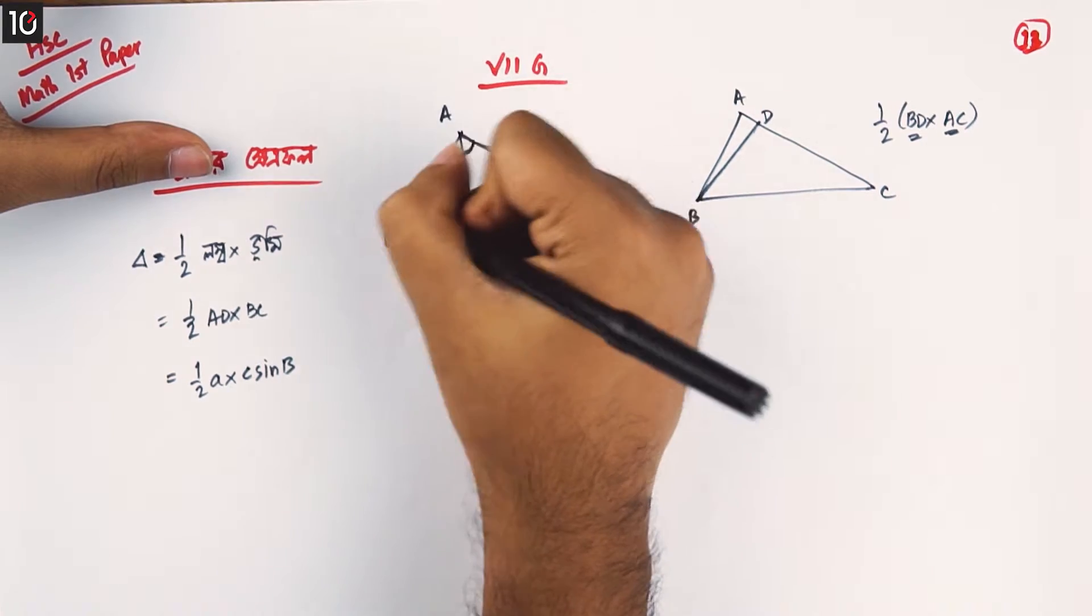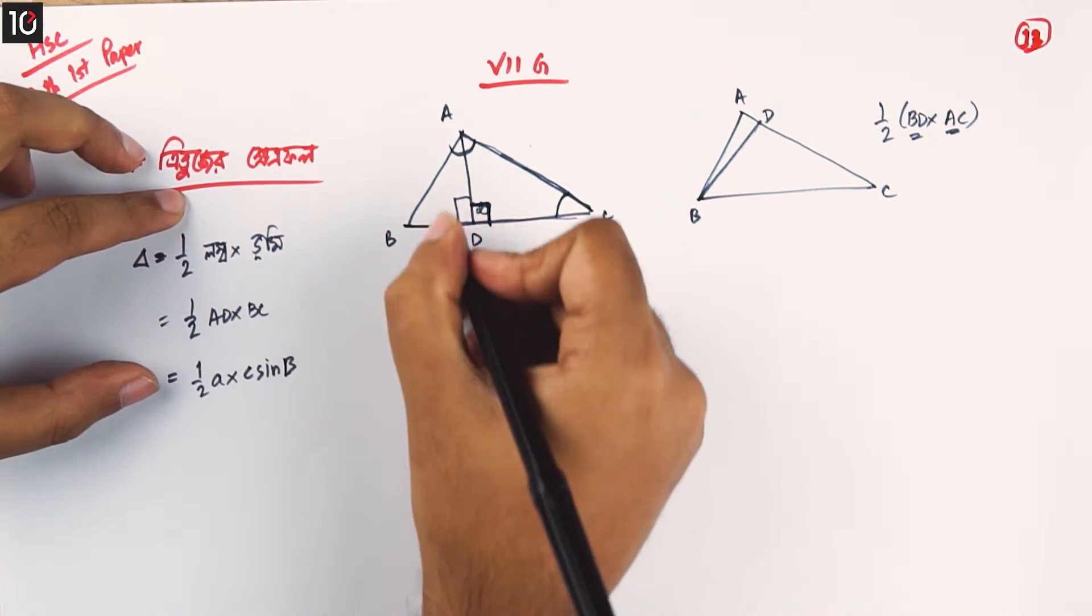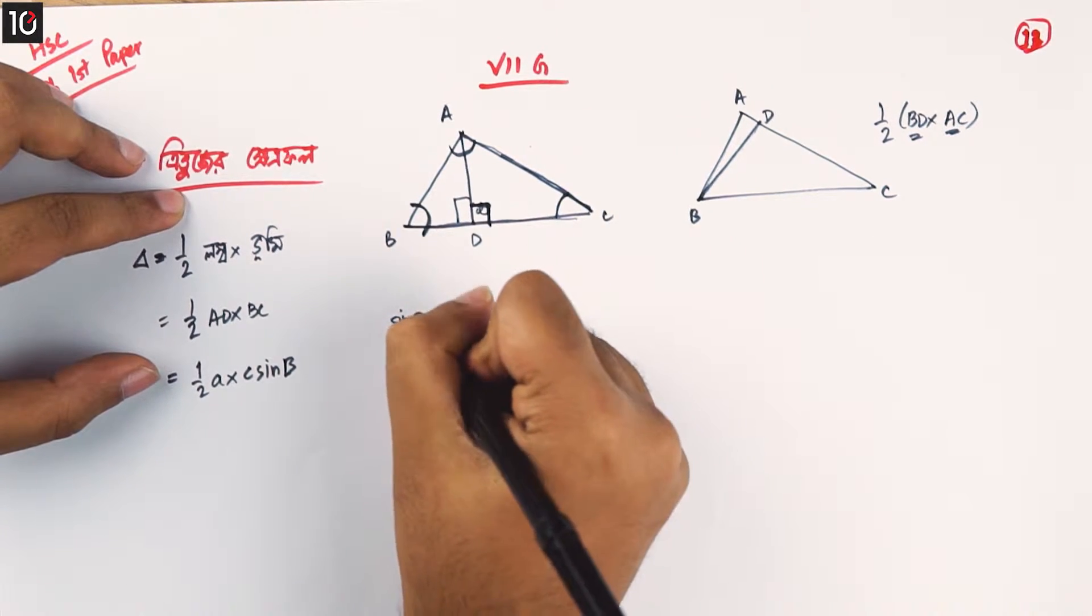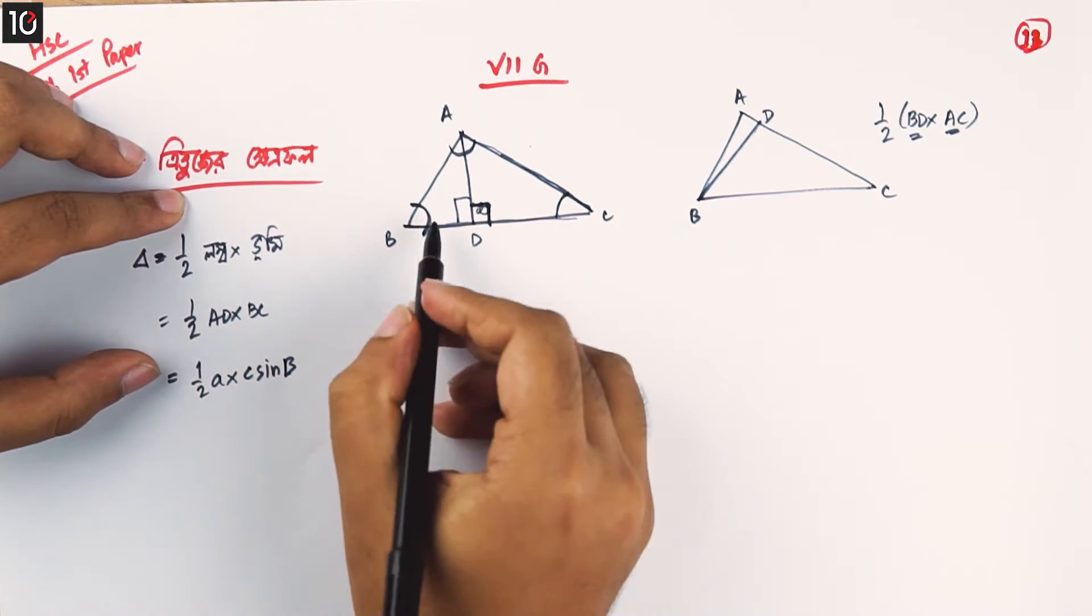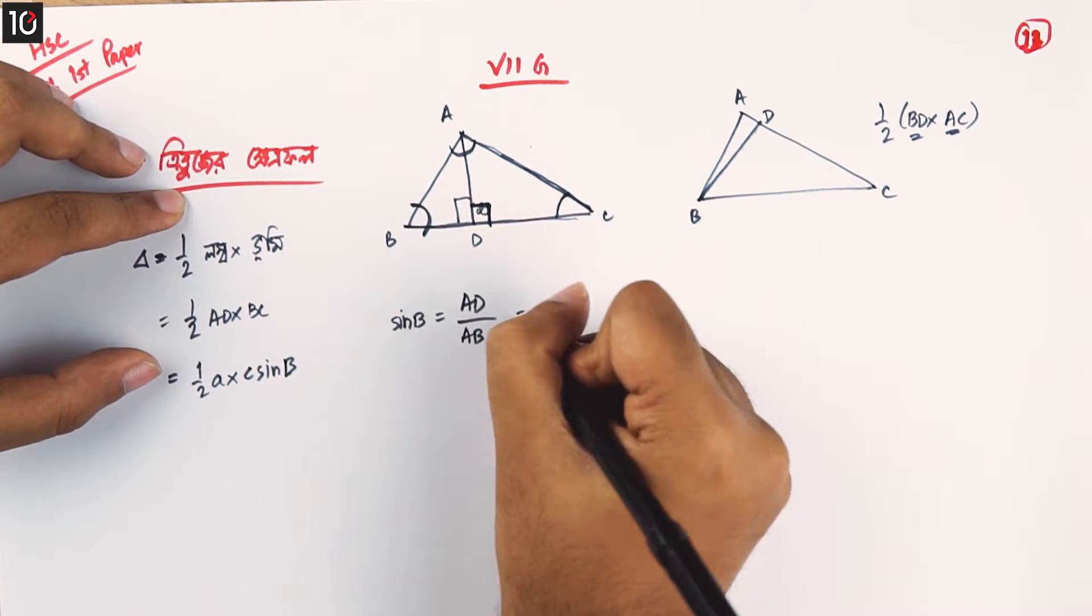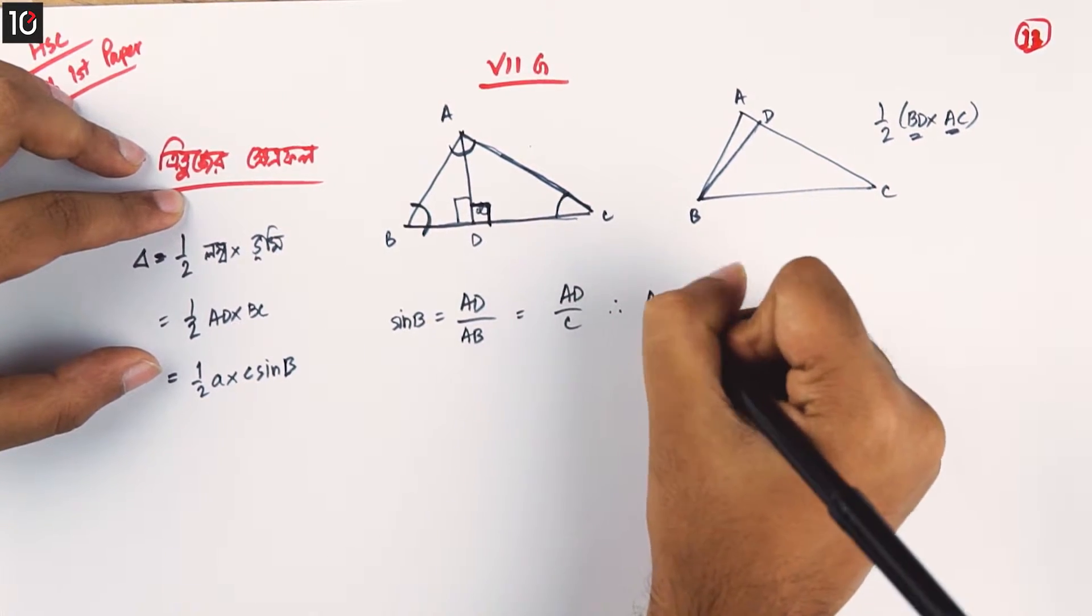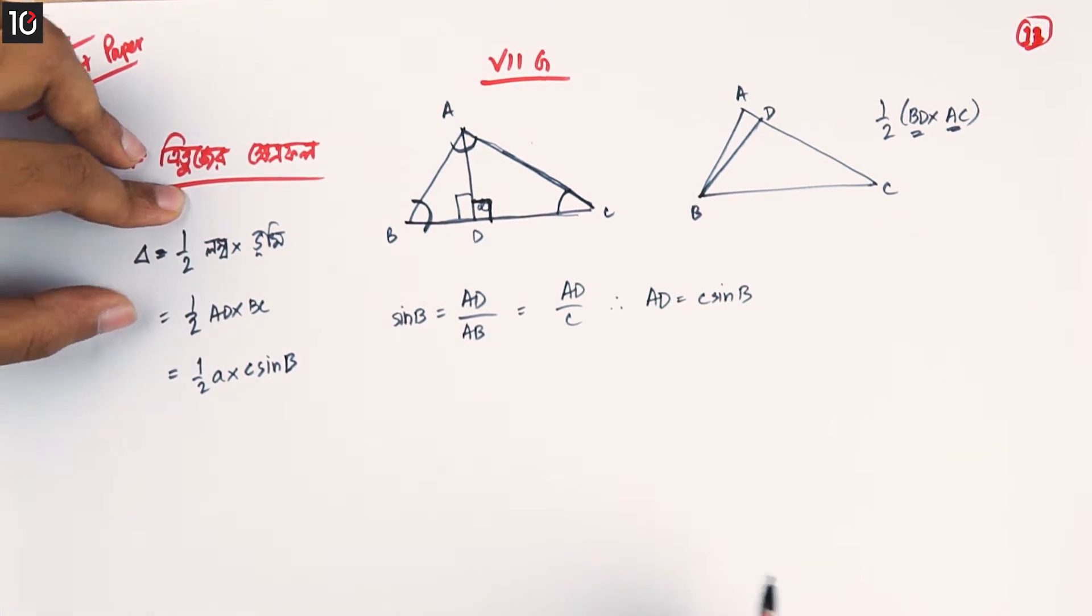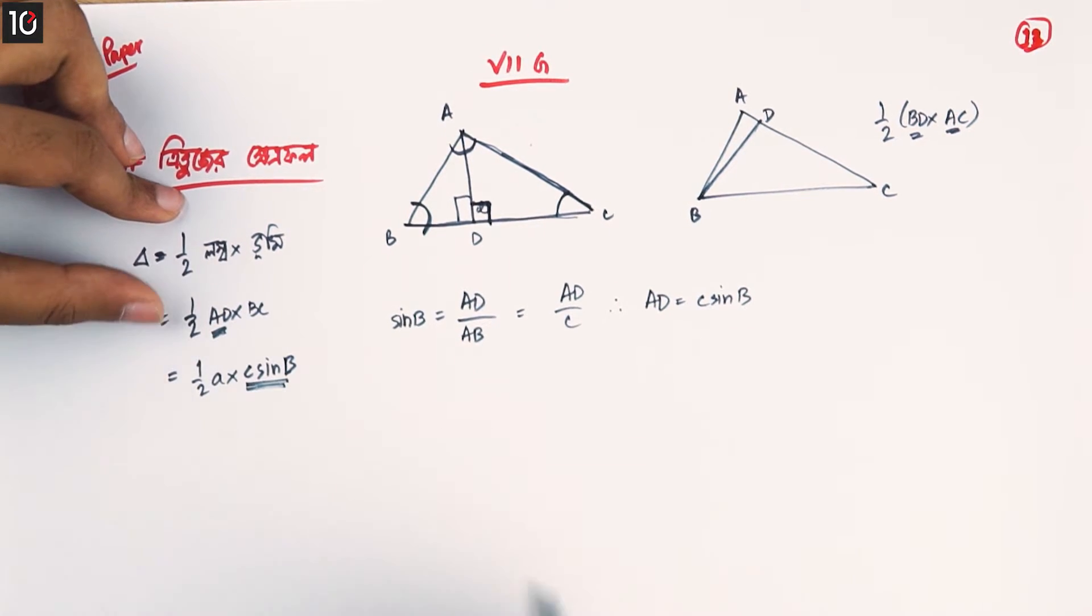This is A, B, D. So this is sin B. And AD equal to c sin b.